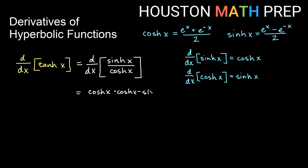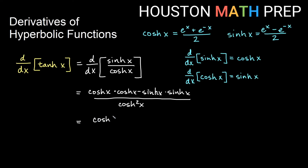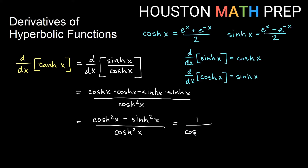Minus the high function, which is sinh x, times the derivative of the low function — which is, if we look here, the derivative of cosh is sinh. So we've got that for our numerator, and then all over the square of the denominator, so we get cosh squared x there. Cosh x times cosh x is cosh squared x; sinh x times sinh x gives us sinh squared x. So we have cosh squared x minus sinh squared x on top, and cosh squared x on the bottom. From our last hyperbolic video on identities, cosh squared x minus sinh squared x equals 1, so this becomes 1 over cosh squared x.